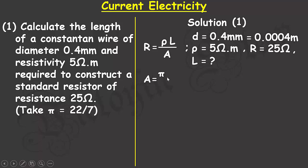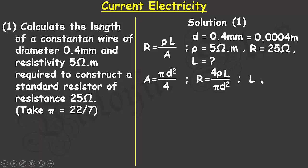The area of a circle is pi d squared divided by 4. Substituting this area into the resistivity equation, the resistance becomes 4 rho L divided by pi d squared. Making L the subject of the formula, L equals pi d squared multiplied by the resistance divided by 4 multiplied by the resistivity.